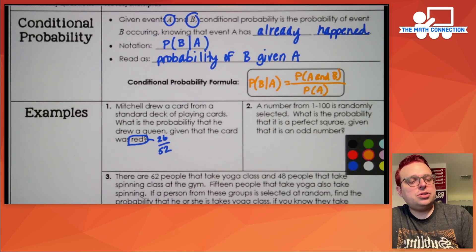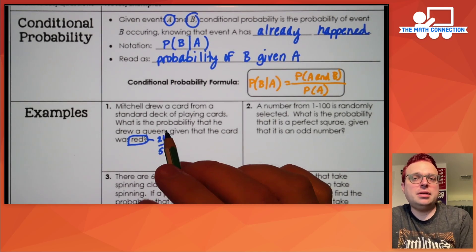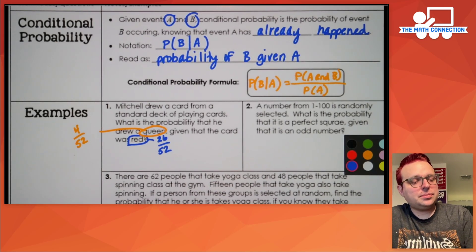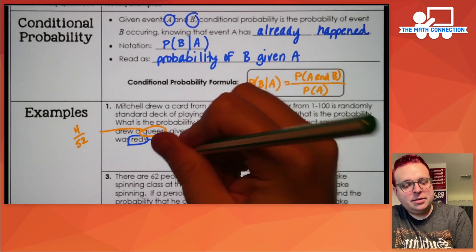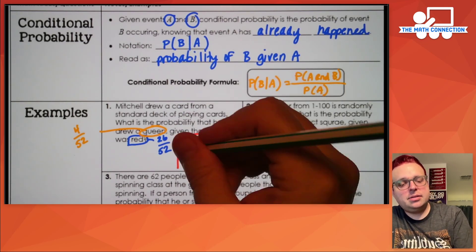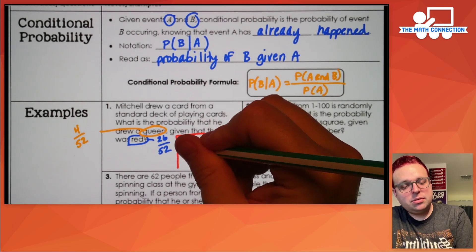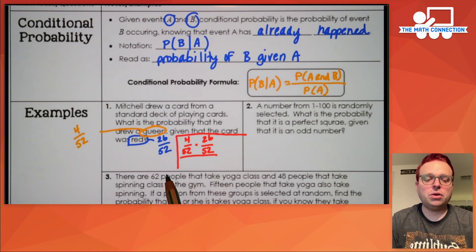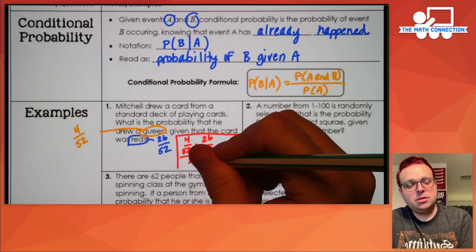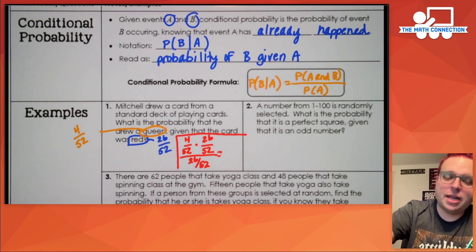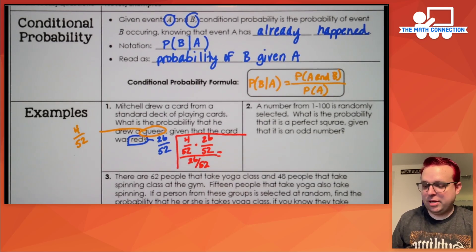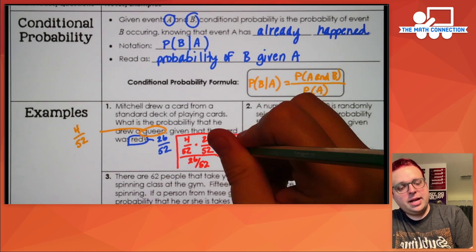The probability that it's red is going to be half the cards — there are 52 cards in a standard deck, 26 are black and 26 are red, so this probability is 26 out of 52. There are only four queens in a deck, so the probability of it being a queen is four out of 52. The calculation is four out of 52 times 26 out of 52, divided by 26 out of 52. When you calculate that you get one in 13.